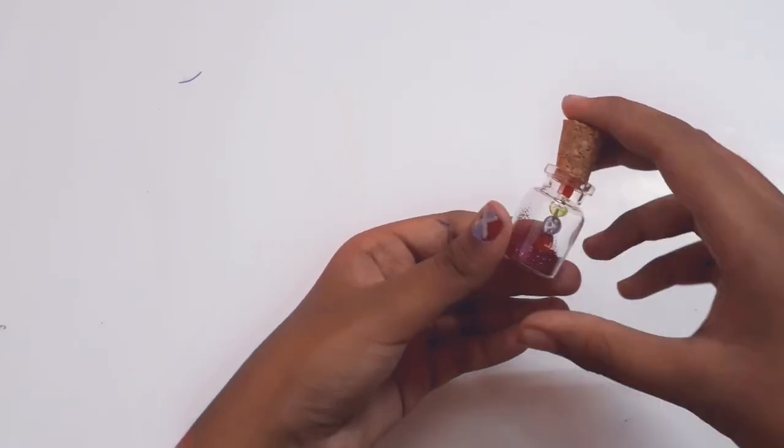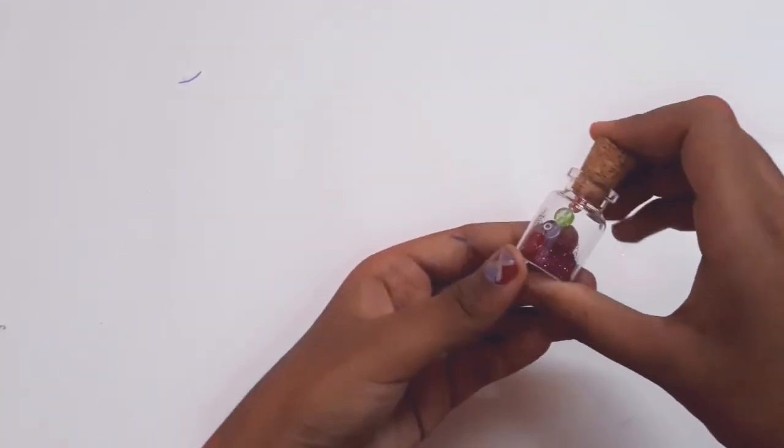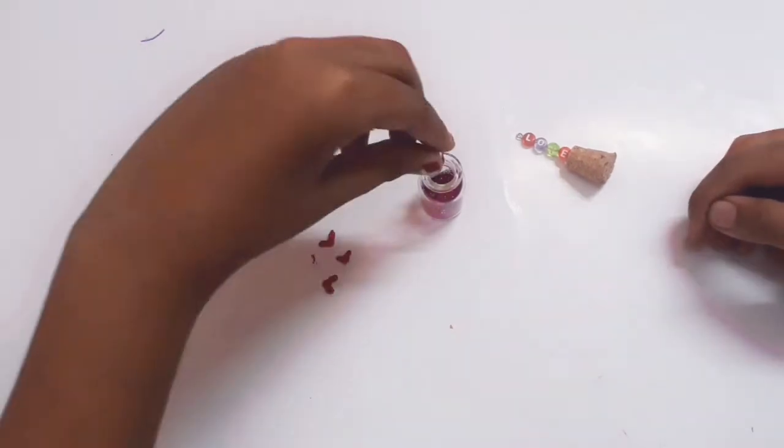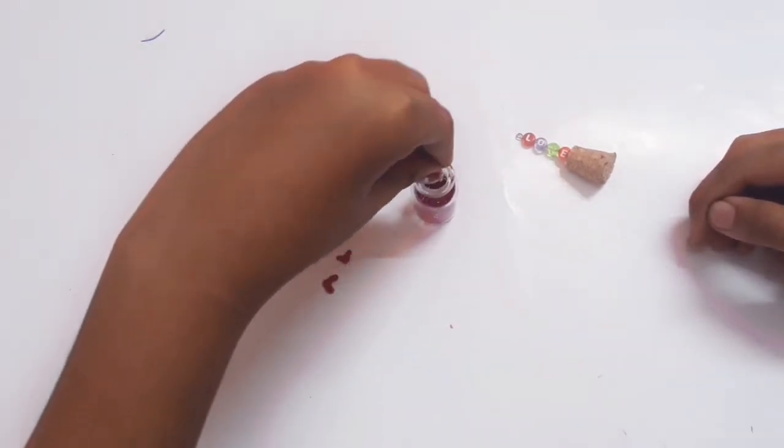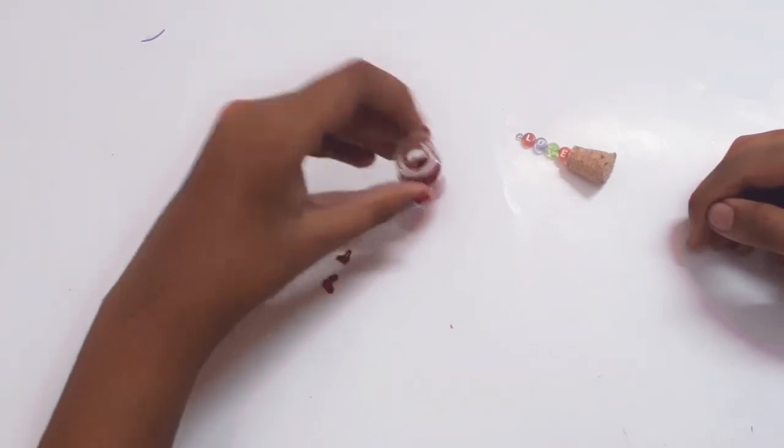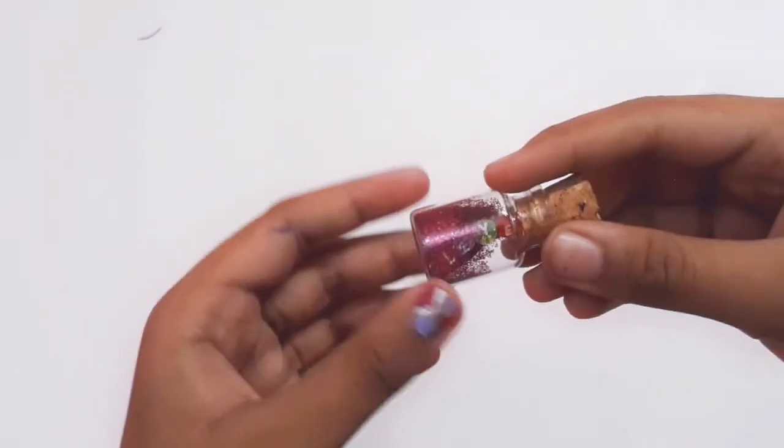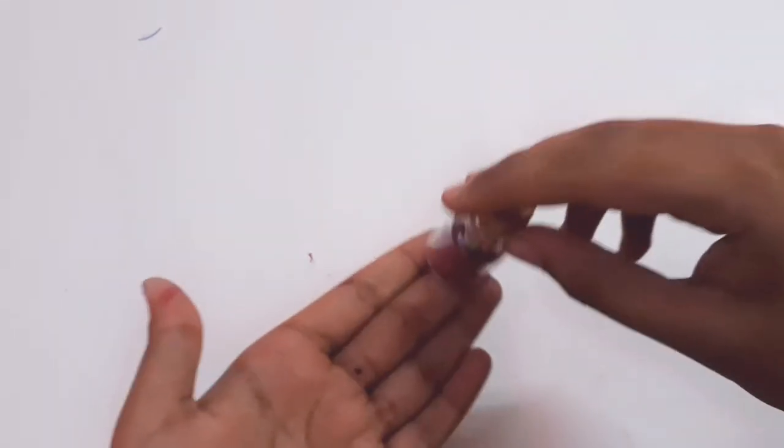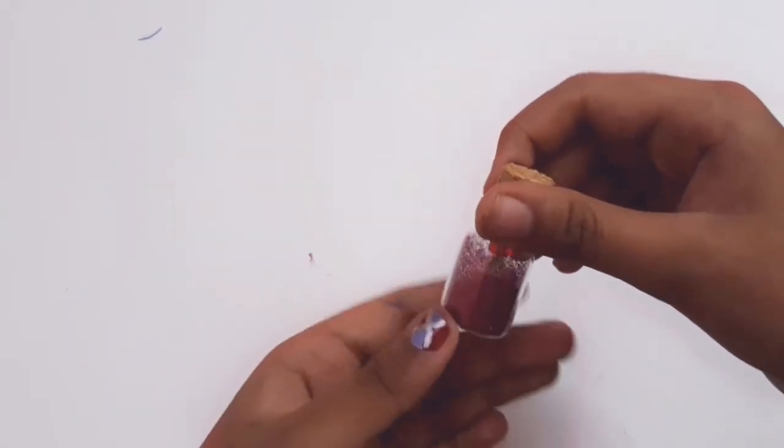Now the hearts are painted and dried, so I'm just going to put the hearts inside the bottle and close it with the cork. This is how it looks. Now I'm going to attach the eye pin to the top of the cork.